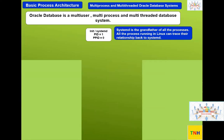In Linux, we have run levels and under systemd and those things. The very first thing is the init system, or systemd — the system daemon process. Earlier we called it 'init system', but now with the new operating system we call it the system daemon process. This is the process where everything starts — systemd is the grandfather of all processes. All processes running on Linux can trace their relationship back to systemd.